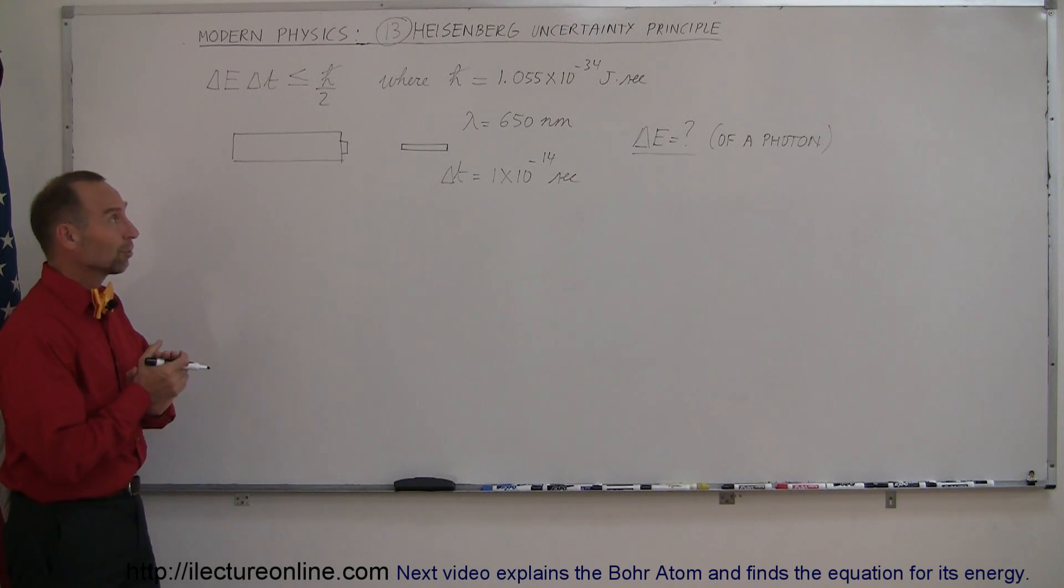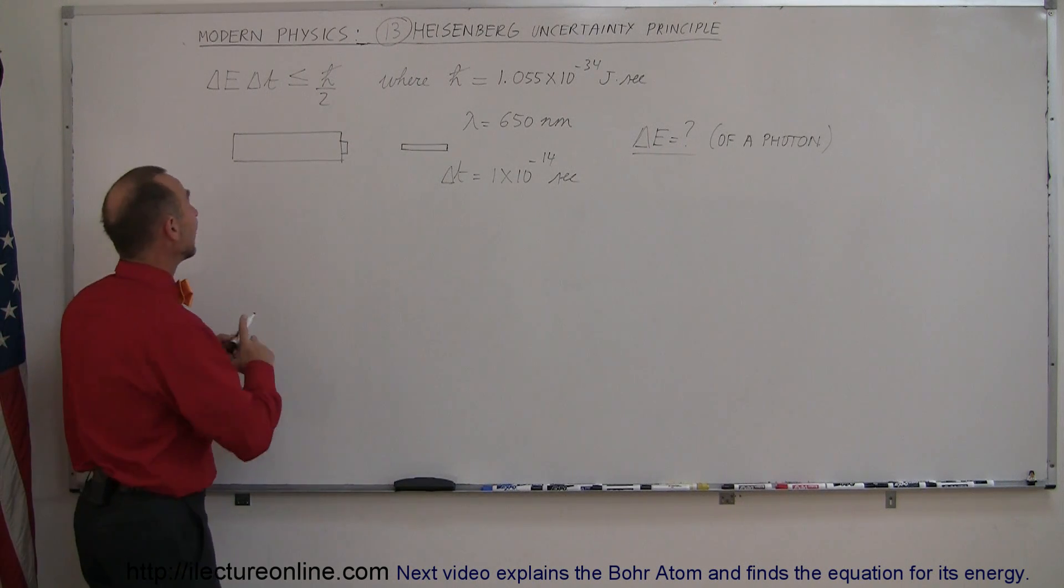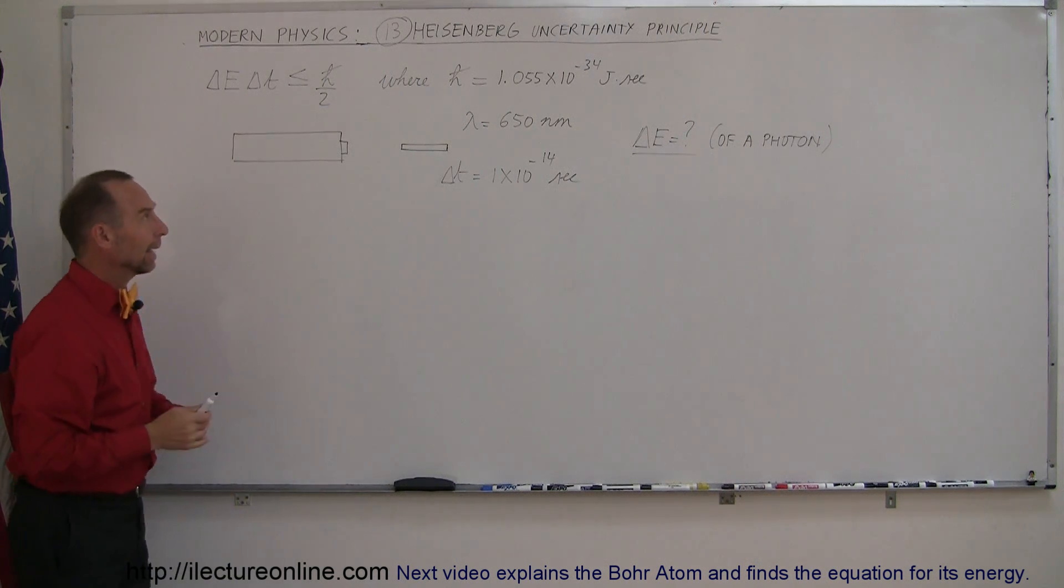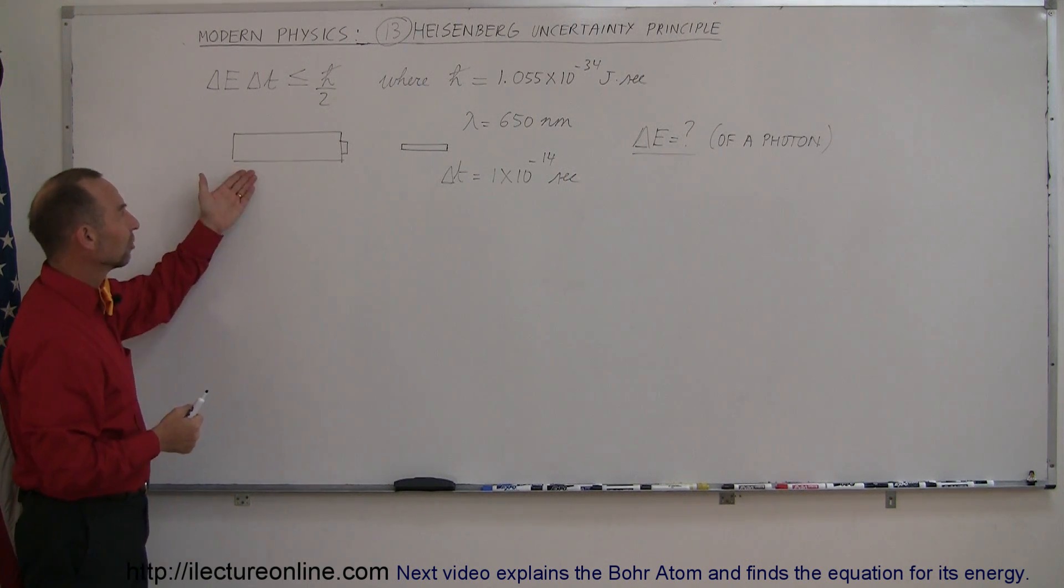Another example of the Heisenberg uncertainty principle is that we can have uncertainty in the energy of, let's say, a photon. As an example, let's say we have a laser.